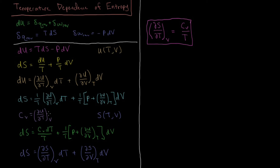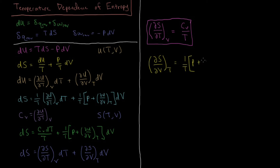Similarly, all the terms inside the parentheses that multiply dV are analogous to the partial derivative with respect to volume. So the partial derivative of entropy with respect to volume at constant temperature equals (1/T)[p + (∂U/∂V)_T].